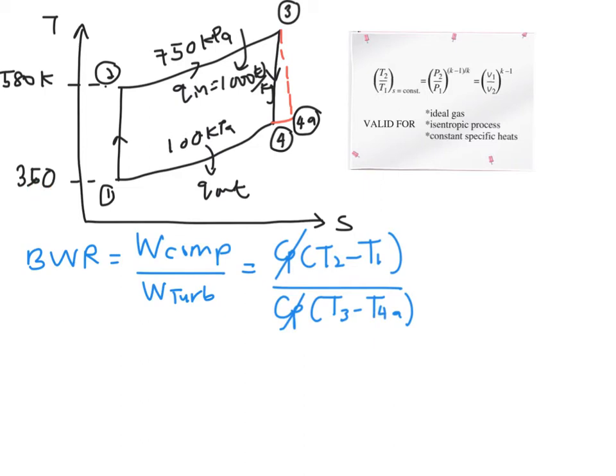So T1 and T2 is already given, T3 and T4 you have solved previously. So you plug in all the values and finally you will get 0.393 or you can leave it in percentage, which is 39.3%.